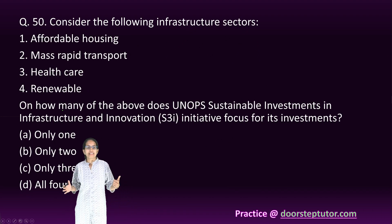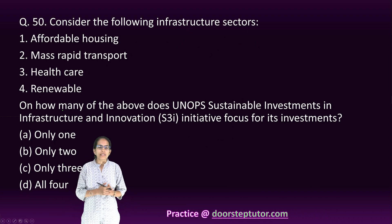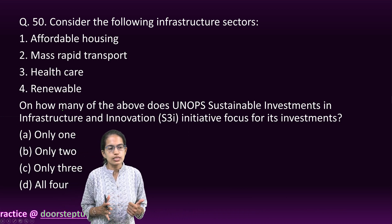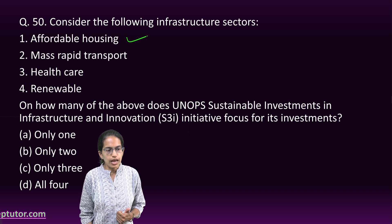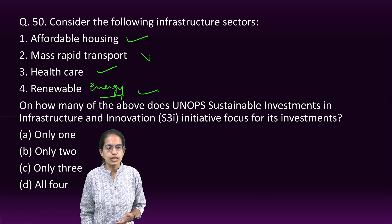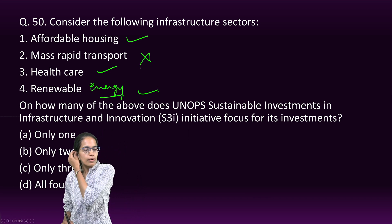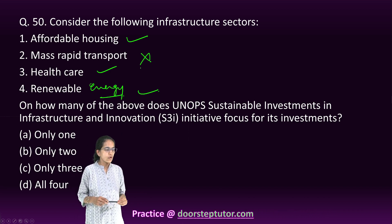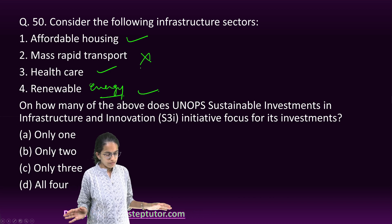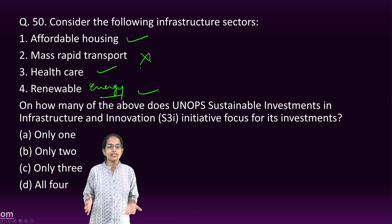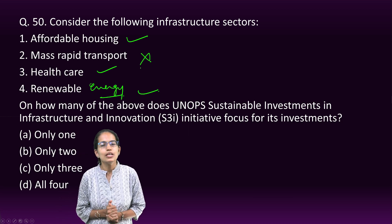The final question is about UNOPS Sustainable Investments in Infrastructure and Innovation. Its focus areas include affordable housing, healthcare, renewable energy, and education. However, transport is not part of it. Among the given choices, three are the correct answers. That concludes the next set of 25 GS Paper 1 questions — stay tuned for more sets in the coming lectures. Have a wonderful day!